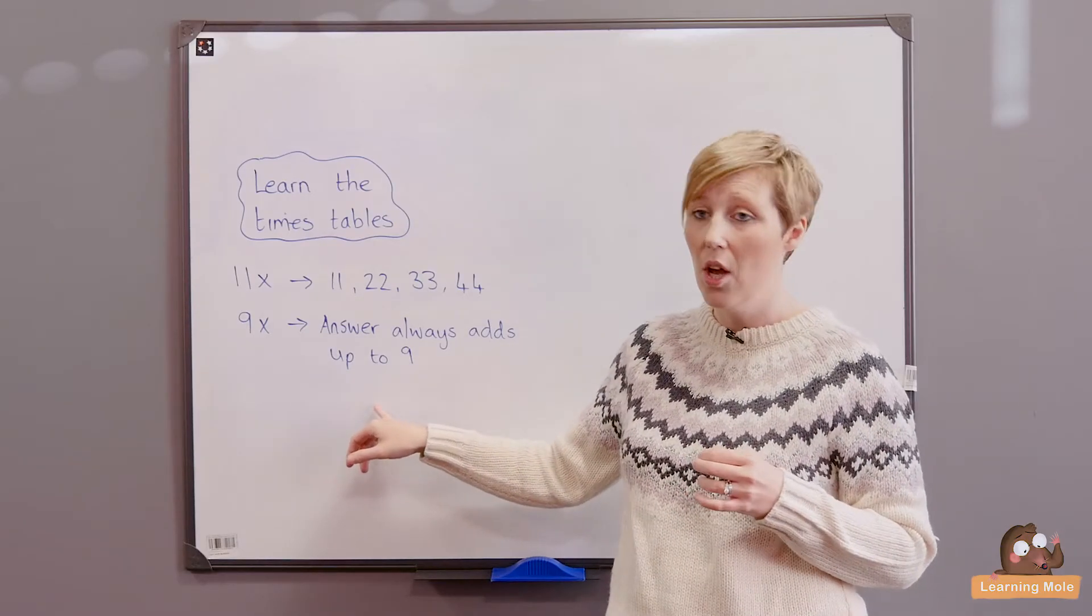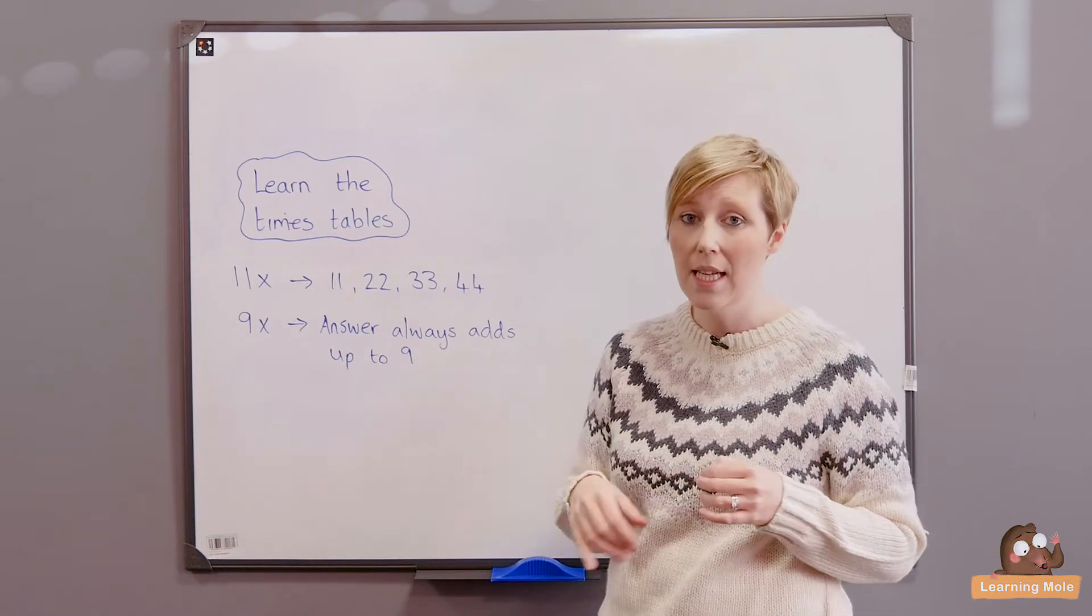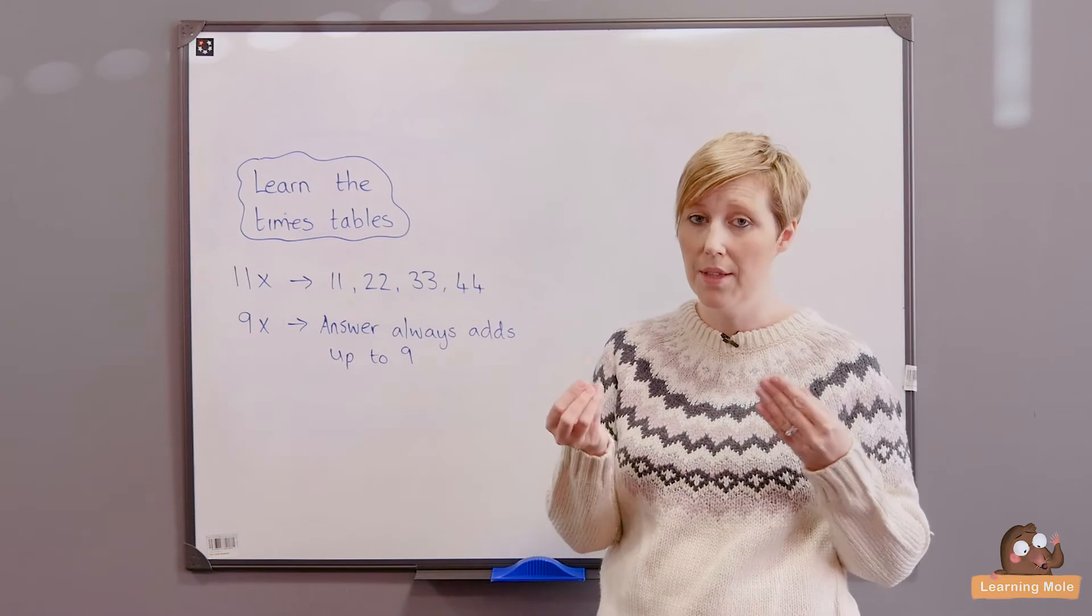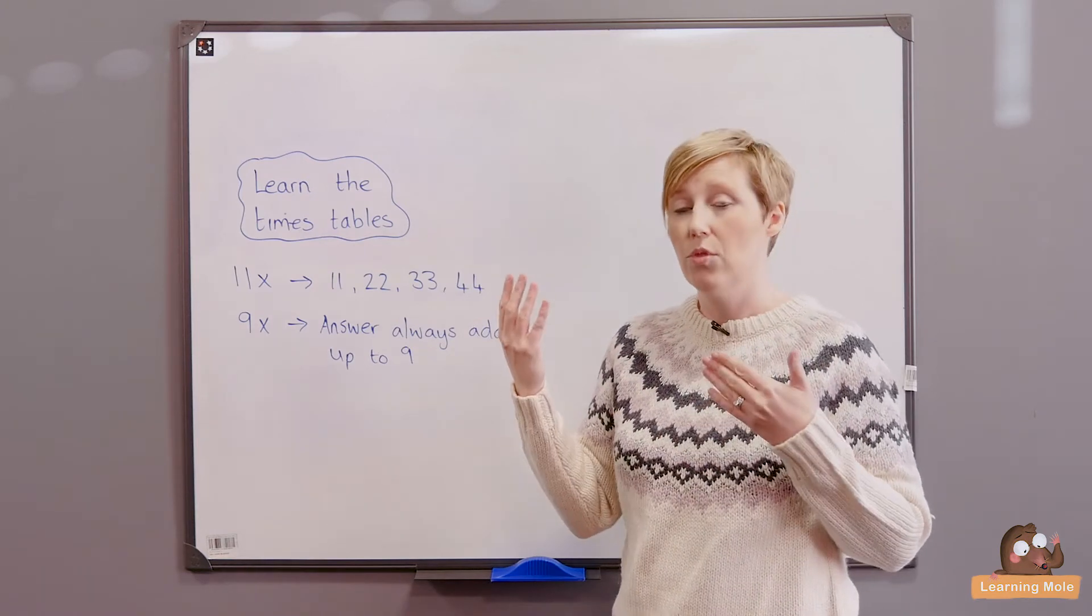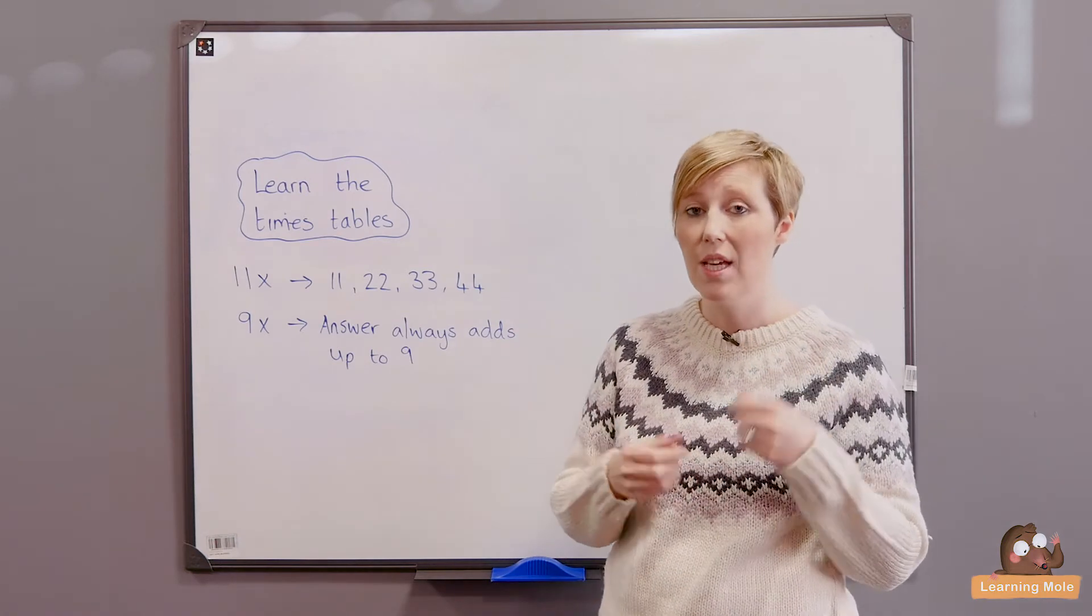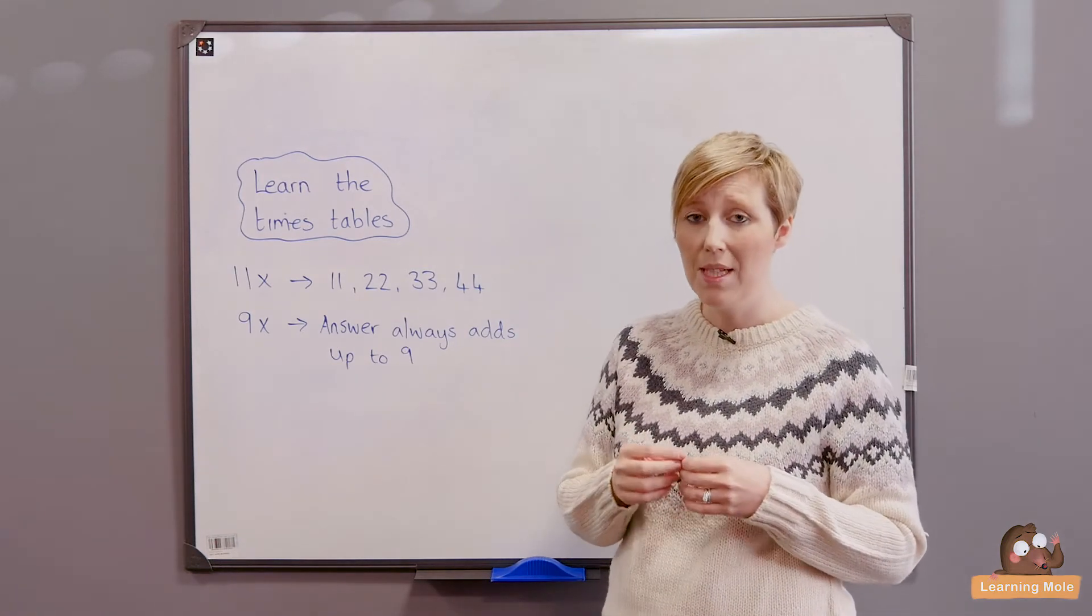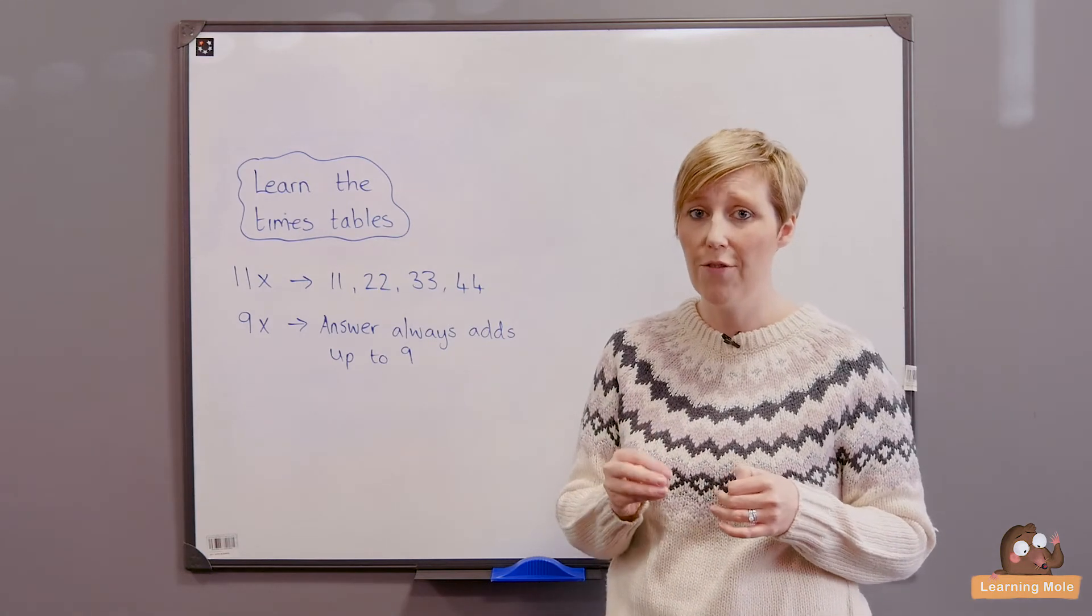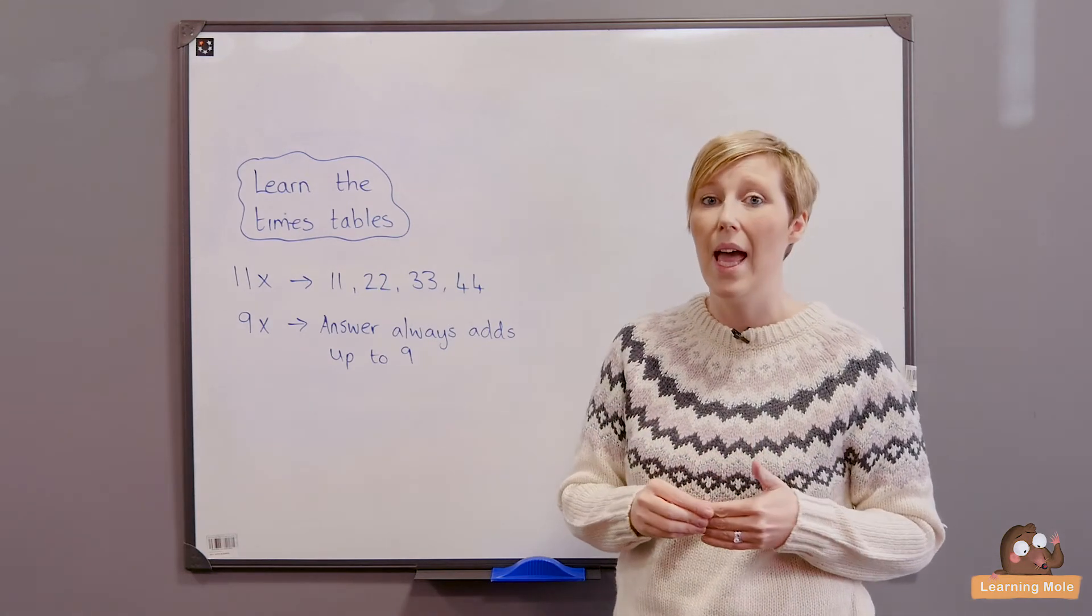So 18: 2 times 9 is 18, 8 plus 1 is 9. Or 3 times 9 is 27, 7 plus 2 is 9. So the answer will always add up to 9. Another really great way of double checking that they have thought of a nine times table.